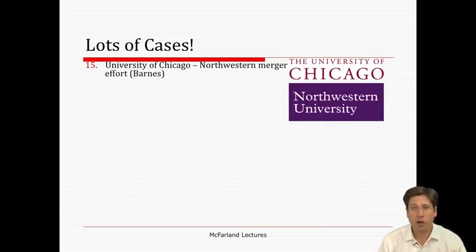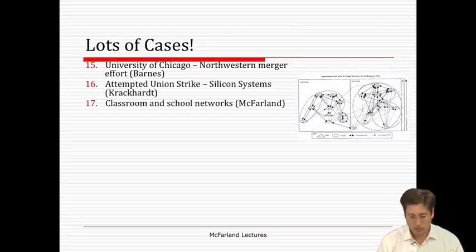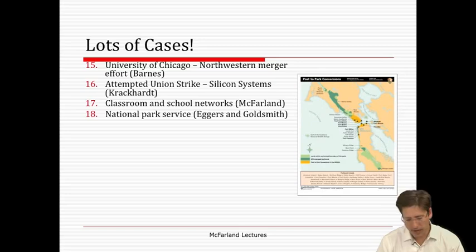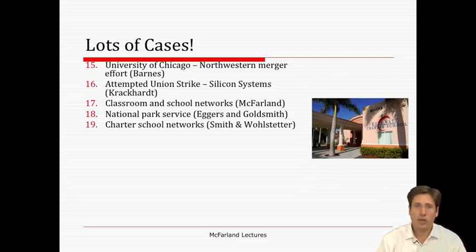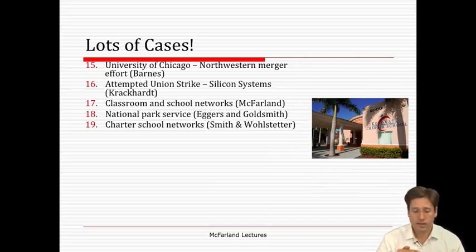We spent some time talking about my alma mater, the University of Chicago, and its effort to merge with Northwestern as a case of resource dependence. We talked about an attempted union strike in a silicon systems firm. We talked about classroom and school networks in my own research, as well as university networks. With Eggers and Goldsmith, we learned about the National Park Service and how they form network forms of organization. And then we had charter school networks in a reading by Smith and Wollstetter — a field of organizations where there's an effort to alter the form and create variation in something that was quite consistent, with every school looking the same.